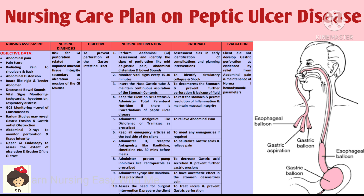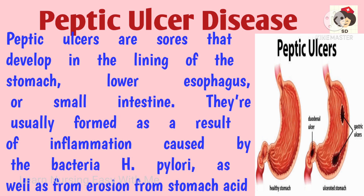Peptic ulcer disease is a condition where there is erosion and ulceration of the gastric mucosa, which is caused by a bacteria called Helicobacter pylori infection, or it can be due to starving where there is increased HCl production and there is no food to neutralize the acids.